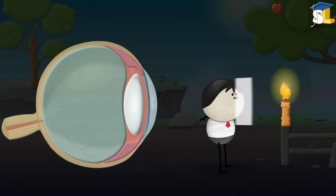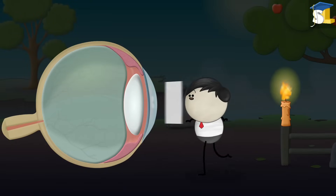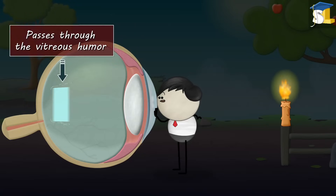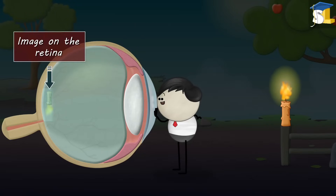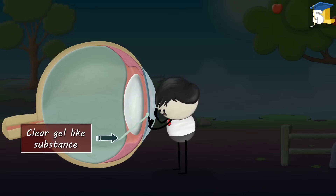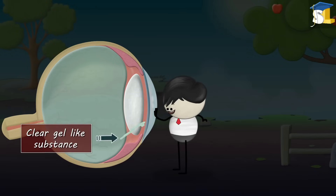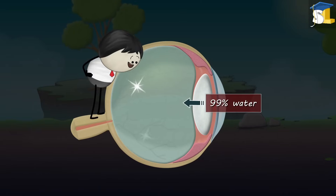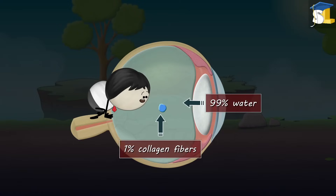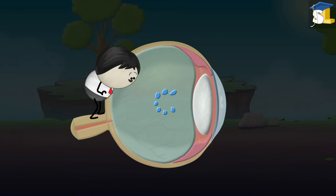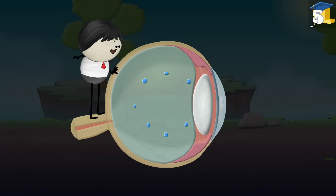When light from an object enters into our eyes, it passes through the vitreous humor to form an image on the retina. Vitreous humor is a clear gel-like substance. It is 99% water and 1% collagen fibers. These collagen fibers are spread evenly throughout the vitreous humor.